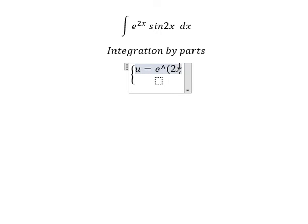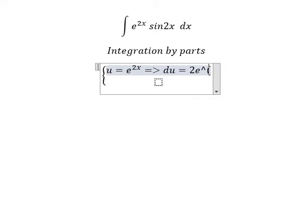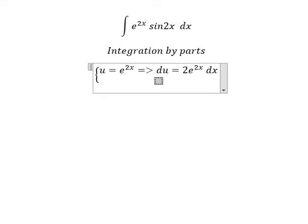So if we do first derivative for both sides, we have du = 2e to the power of 2x dx. dv we will have sin 2x dx. The integration of this one, we have v equals to negative 1 over 2 cos 2x.